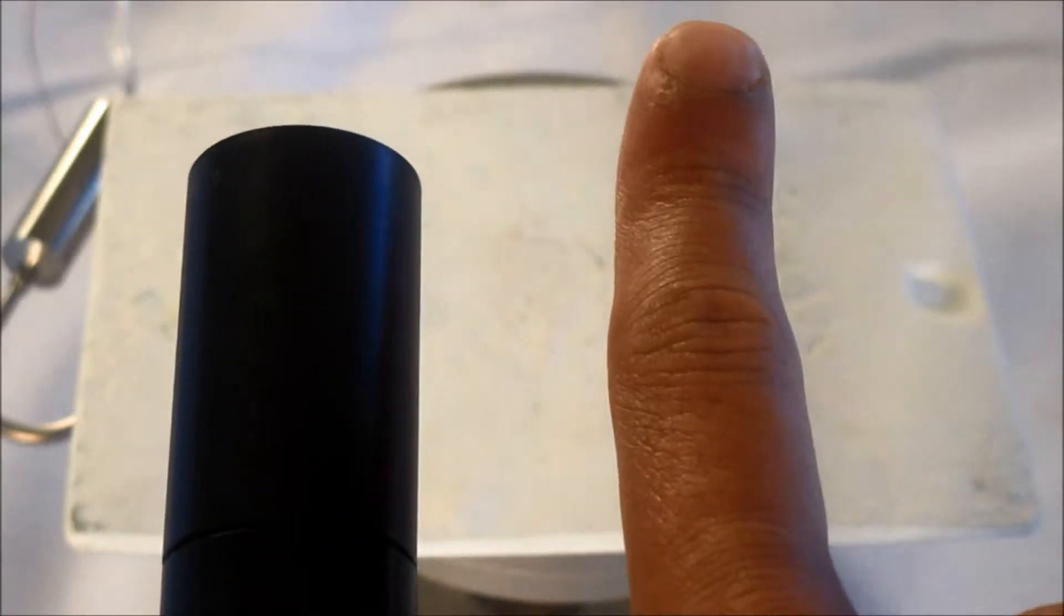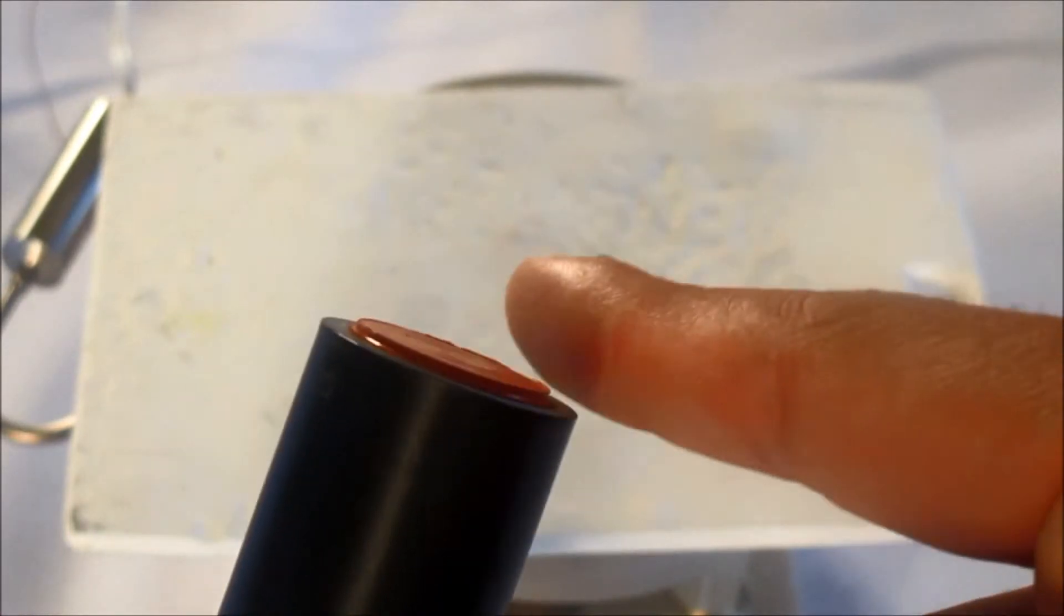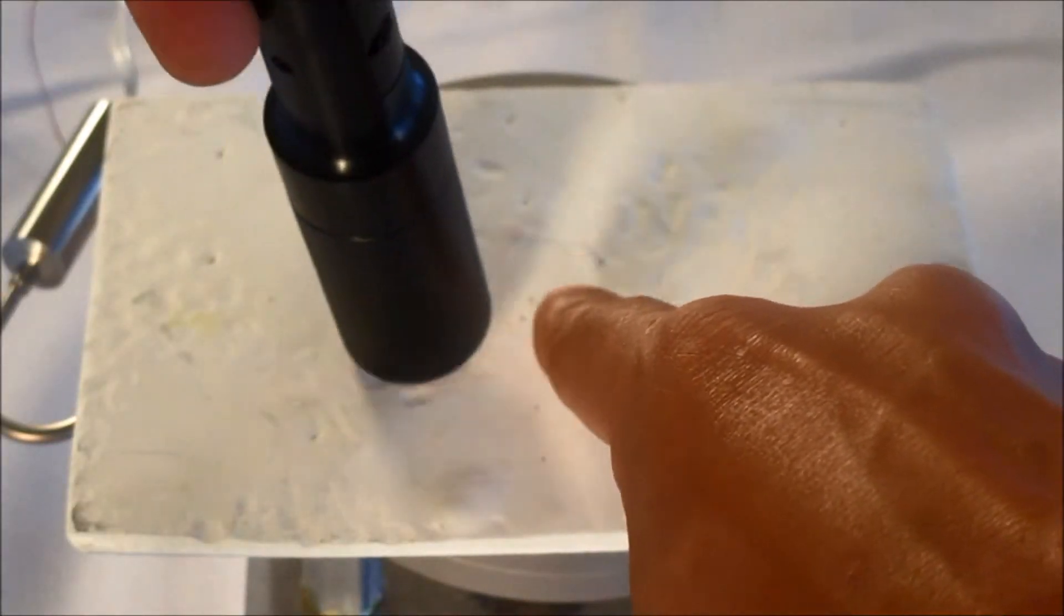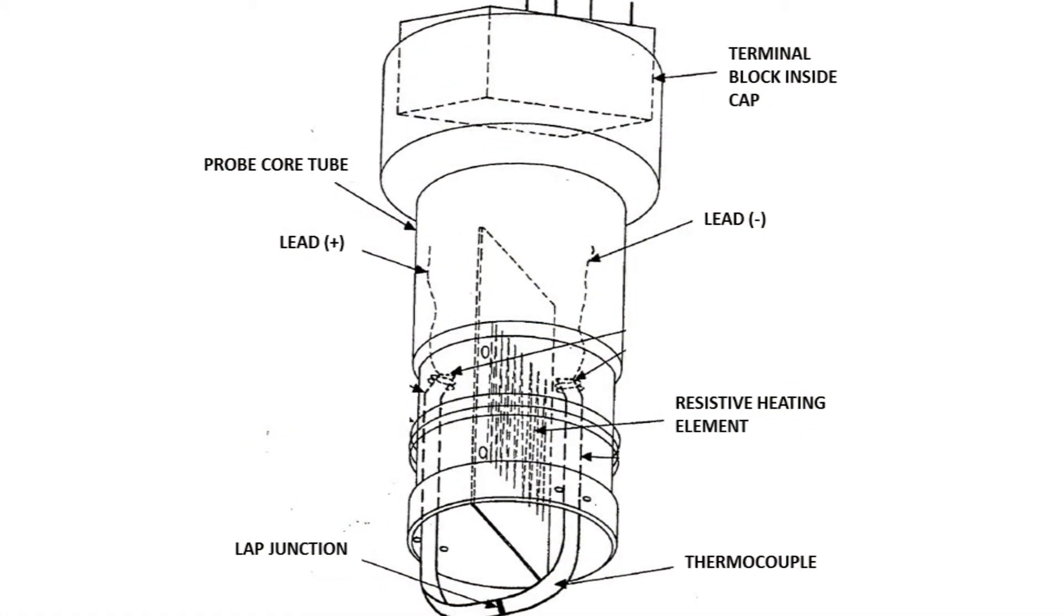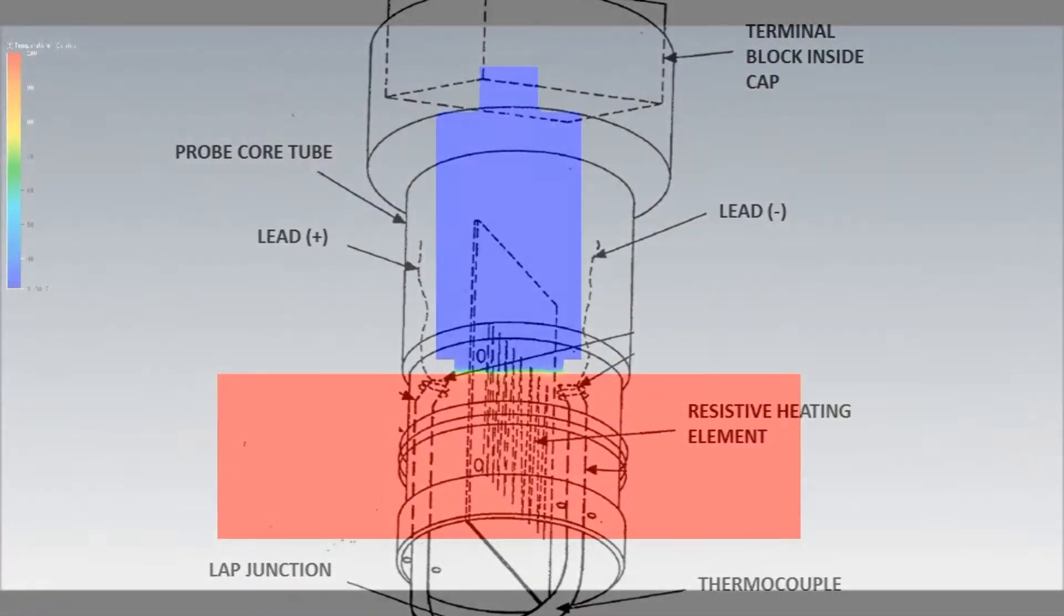The key feature of our device is a specially designed probe that replicates the thermal response of a human finger. We've achieved this by using a material with human-like thermal properties, simulating human body temperature, and precisely positioning the probe's internal components.